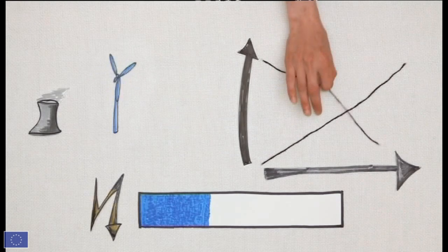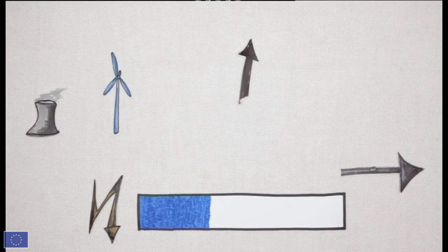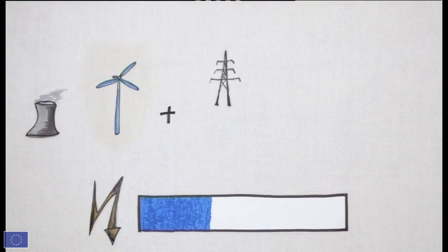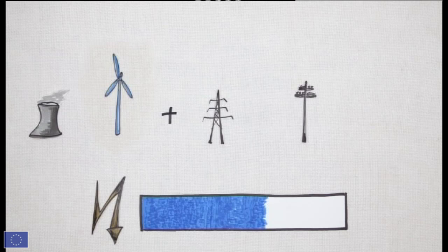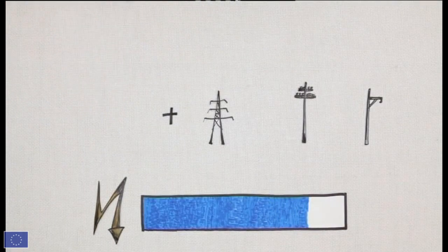Then your supplier sells the electricity at a price that includes its costs, its profit, and the services provided. The second factor is delivery to your meter, which accounts for 30-40%. Energy regulators in each member state set prices for this cost element.